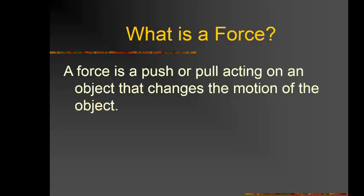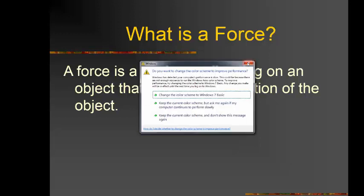If we have a body and push it, it changes from rest to motion. If we move it, we can force it to stop or reduce its speed. This force can be a push or pull, and the result is it changes the object's motion — rest to motion, motion to rest, or its speed changes.